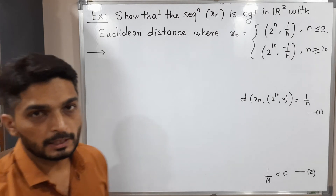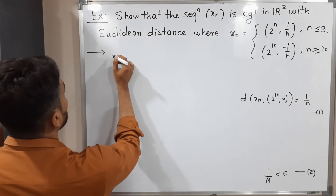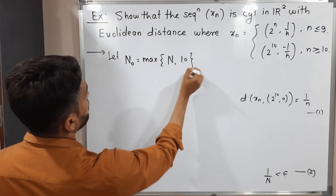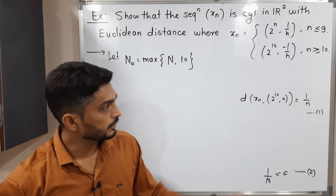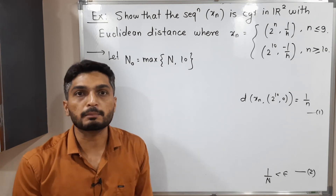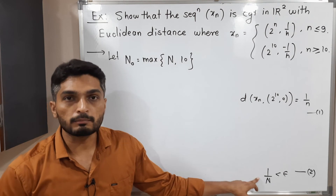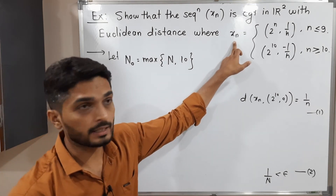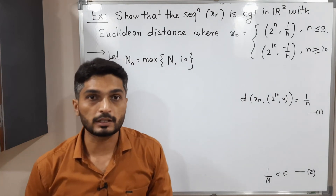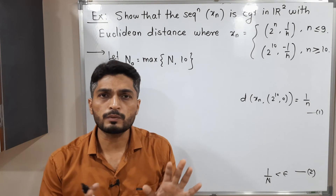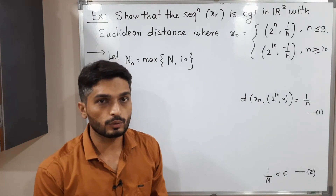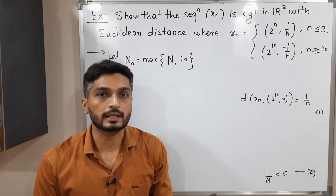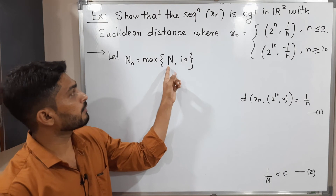Now let N0 equal the maximum of capital N and 10. We include 10 because the second definition of Xn is true for n greater than or equal to 10, so we need N0 at least 10 to freely use that definition. Since N0 is the maximum of N and 10, N0 is greater than or equal to N.